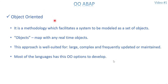In one line, object oriented is a methodology which facilitates a system to be modeled as a set of objects. The name itself tells you — it's object-based. You are going to map everything as a real-time object. It's not only about functions and logic used in traditional language; everything is going to be mapped with real-time objects. This approach is very useful for large, complex, and frequently updated products or systems, which is why every language including ABAP has object oriented concepts.